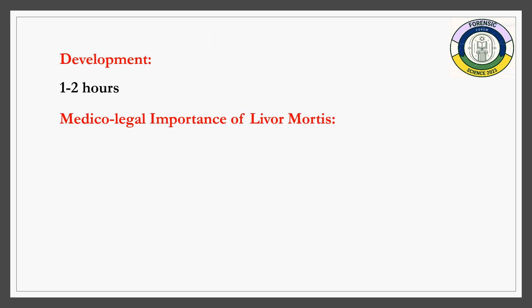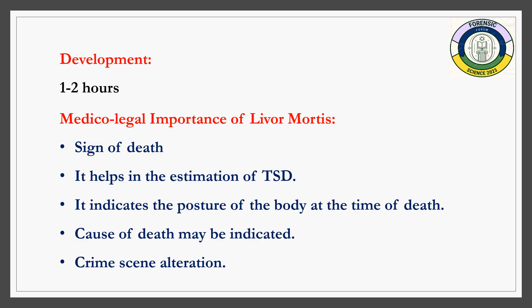The onset of post-mortem staining starts from one to two hours, usually develops within four hours, and is fully developed within five to six hours. If the body is undisturbed, staining gets fixed in eight to twelve hours and persists until putrefaction. Medical-legal importance of livor mortis: it is a sign of death and helps in the estimation of time since death.